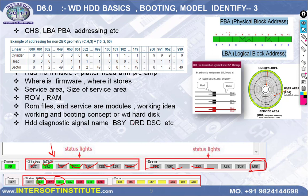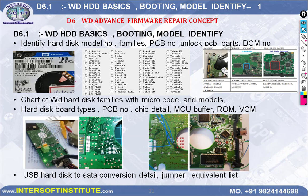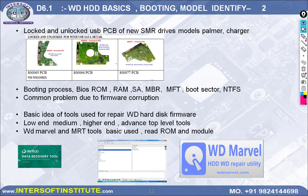If you understand these fundamentals, you can understand the data recovery process easily. After this, there are questions you must answer — very deep questions that can be solved through the videos only. Then chapter D6.1: WD hard disk basic booting, how to identify model number, what is DCM, what is MLC, how to identify which hard disk family, PCB types, Marvel new families, how to convert USB to SATA, jumper pins, and how to make jumpers. Also covered: unlock PCB and conversion PCB numbers.